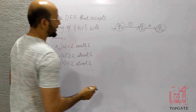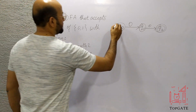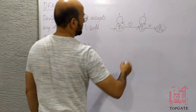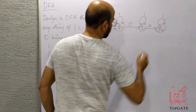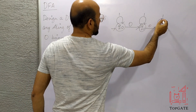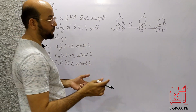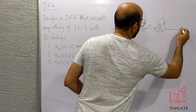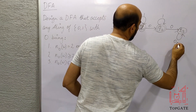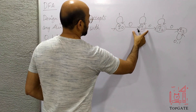So 00 is accepted. Now 0 is still missing a transition at Q2, because if we add a self-loop on 0 at Q2, it would start accepting strings with more than 2 zeros. So we go to a new dead state Q3 on input 0 from Q2, do not make Q3 final, and add a self-loop of 0,1 at Q3. This DFA will accept all strings where the number of 0s is exactly 2.